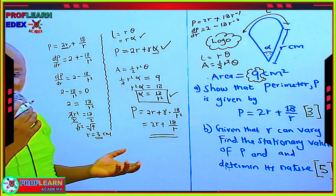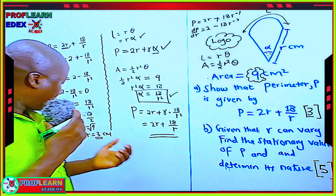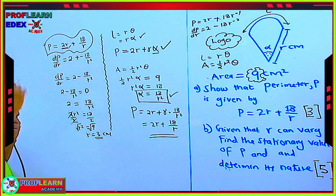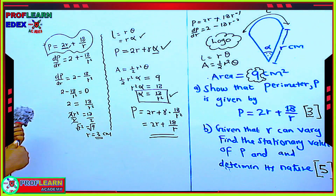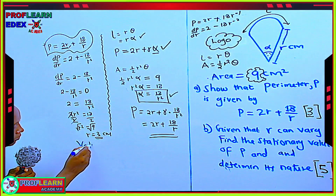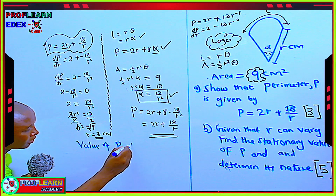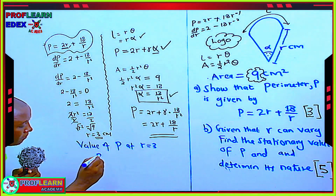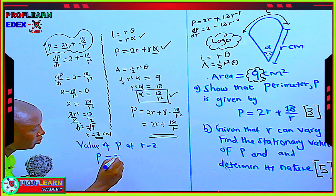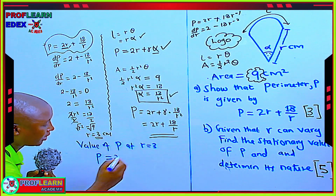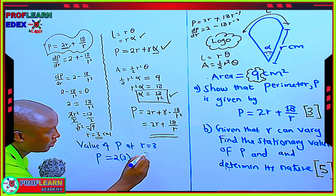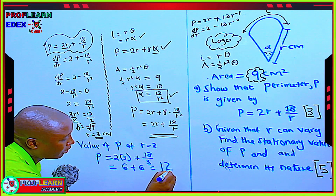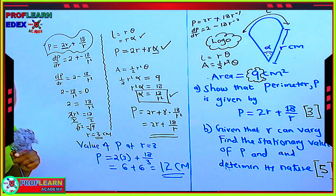At the stationary point R equals 3 centimeters. The value of P at the stationary point: P equals 2R plus 18 over R equals 2 times 3 plus 18 over 3 equals 6 plus 6, which is 12 centimeters. That's the stationary value of P.